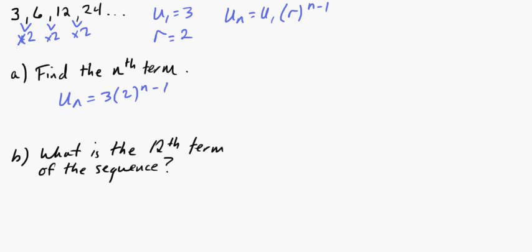Now, part B says, what is the 12th term of the sequence? Well, okay, if we want to find the 12th term, I mean, you can go out and multiply by 2 eight more times if you want. But it's much easier just to write all this down like this. So you just go 3 times 2, and then 12 minus 1. So it's going to be to the 11th power.